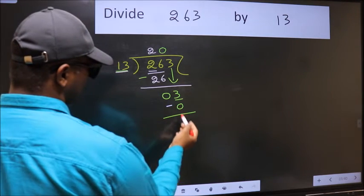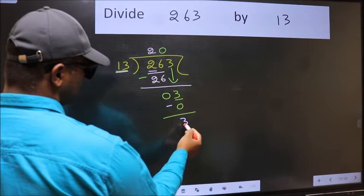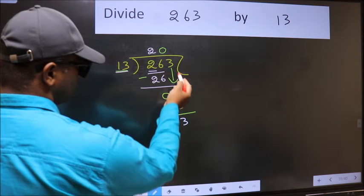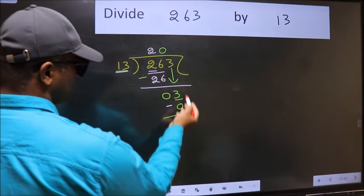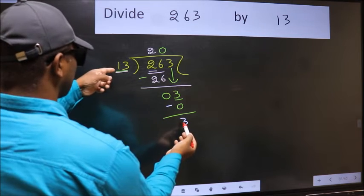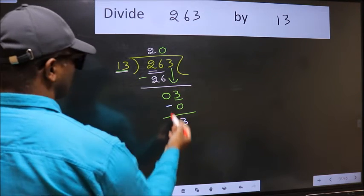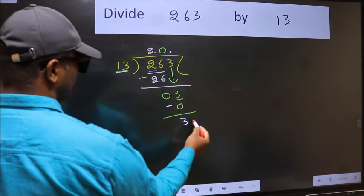Now we should subtract. 3 minus 0, 3. Over here we did not bring any number down. And 3 is smaller than 13.